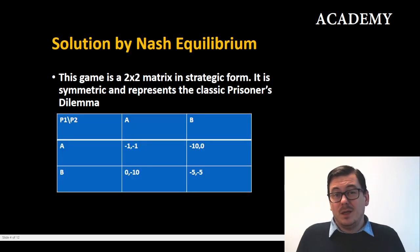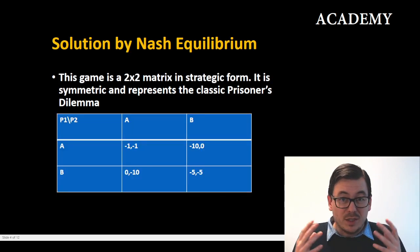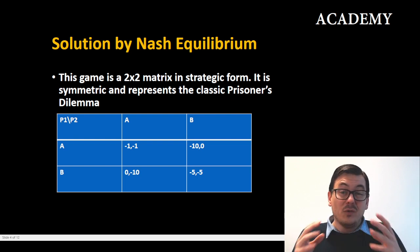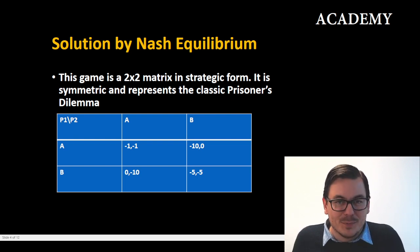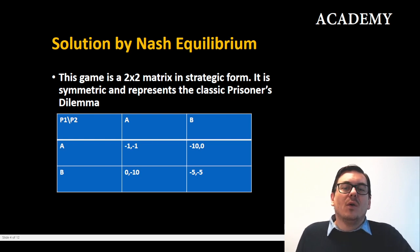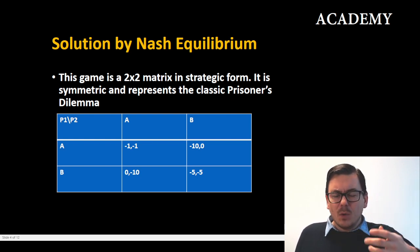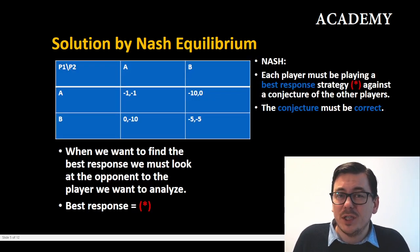I put up here the two by two matrix in strategic form. It is a symmetric game and it represents the classic prisoner's dilemma. So let's look, is there any Nash equilibrium here? Can we solve this game via Nash? We have to look into it.